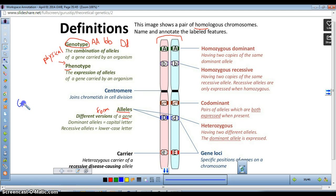A gene is a segment of DNA that codes for a protein. And alleles are different forms of genes.